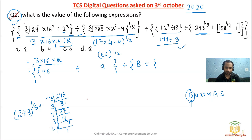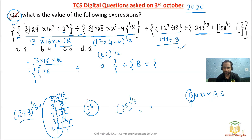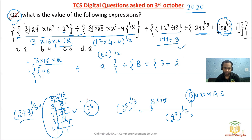So 243 is nothing but 3 to the power 5. Therefore 243 to the power 1/5 becomes 3 to the power (5 × 1/5) = 3. Similarly, 128 factorizes to 2 to the power 7, and 128 to the power 1/7 becomes 2.